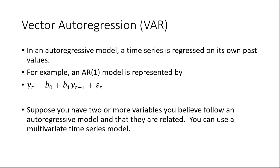Vector autoregression is an extension of the autoregressive model, which is a time series that is regressed on its own past values. For example, an AR(1) model is represented by y_t equals b_0 plus b_1 times the lagged value of y plus an error term. You can have more than one lag, and we call those AR(p) models where p is the number of lags.